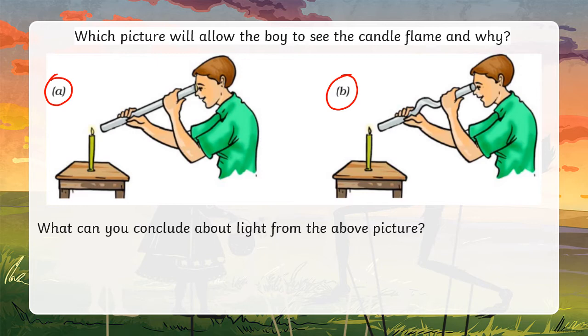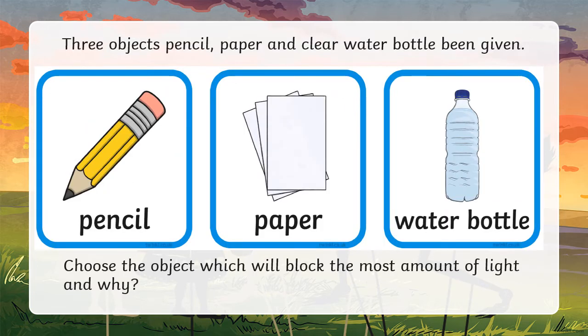Let's think about picture A. It concludes that light travels in straight line. That's why the boy is able to see in a straight tube. If light can go around or bend, he will be able to see in picture B, which is not the case here.